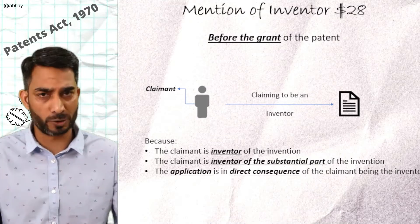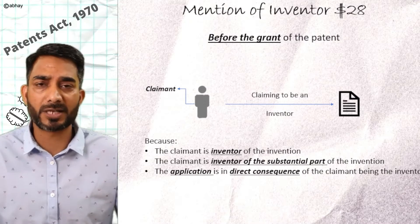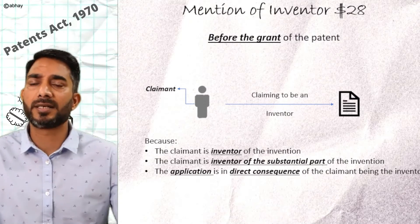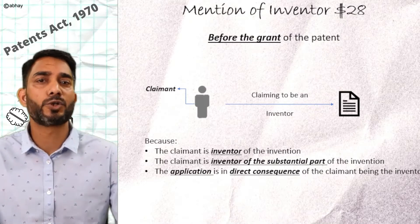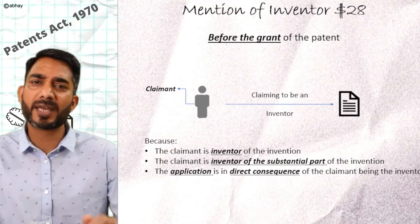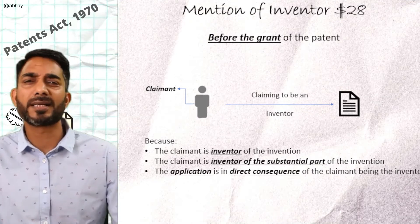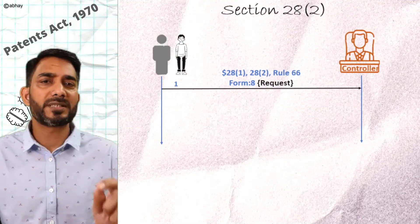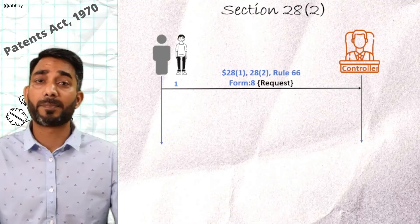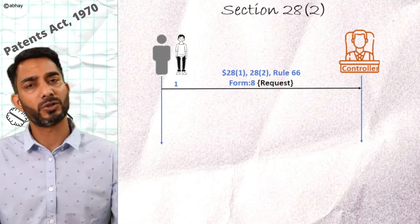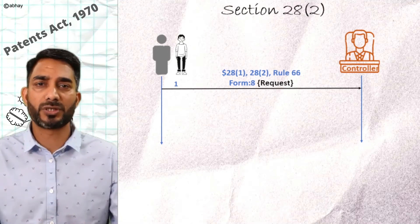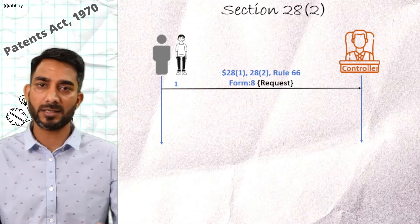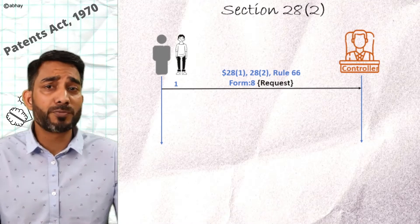There could be a couple of scenarios here: one where the applicants are okay for his name to be included in the patent application, and another where the applicants are not okay. Let's go over such cases and what provisions we have as per the Act to handle such situations. Beginning with the first case where applicants are okay with him being mentioned as the inventor — as per Section 28 to Rule 66, the applicant on its own or with such a claimant can approach the controller.